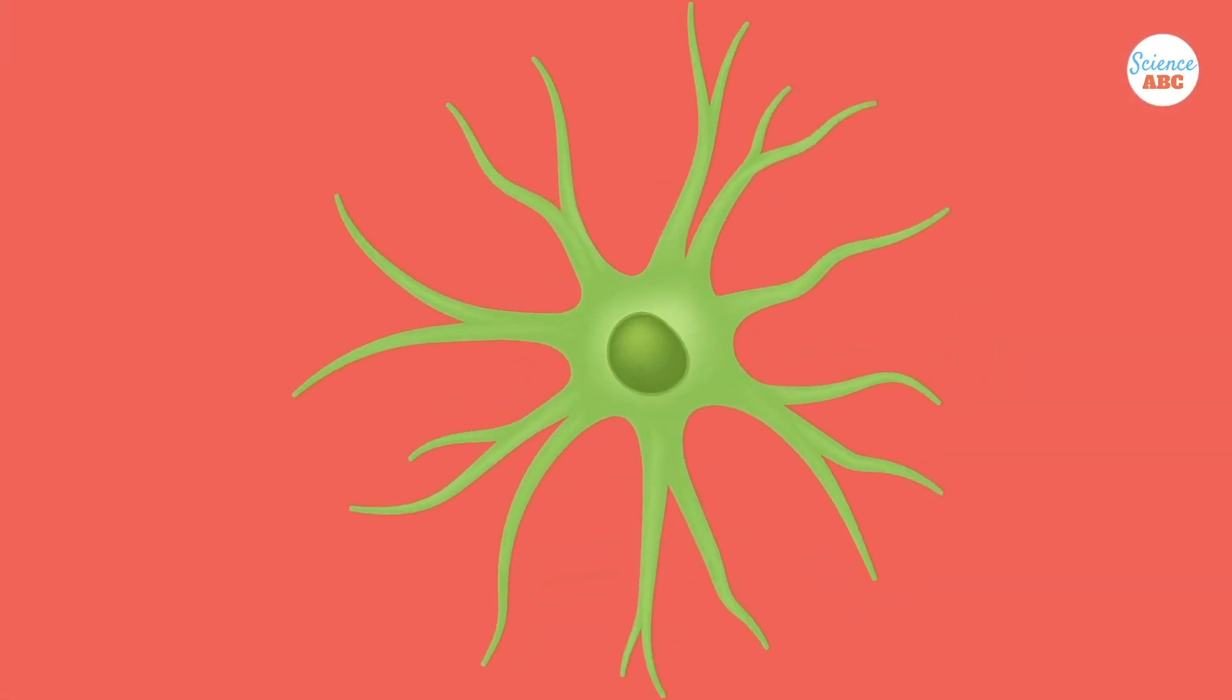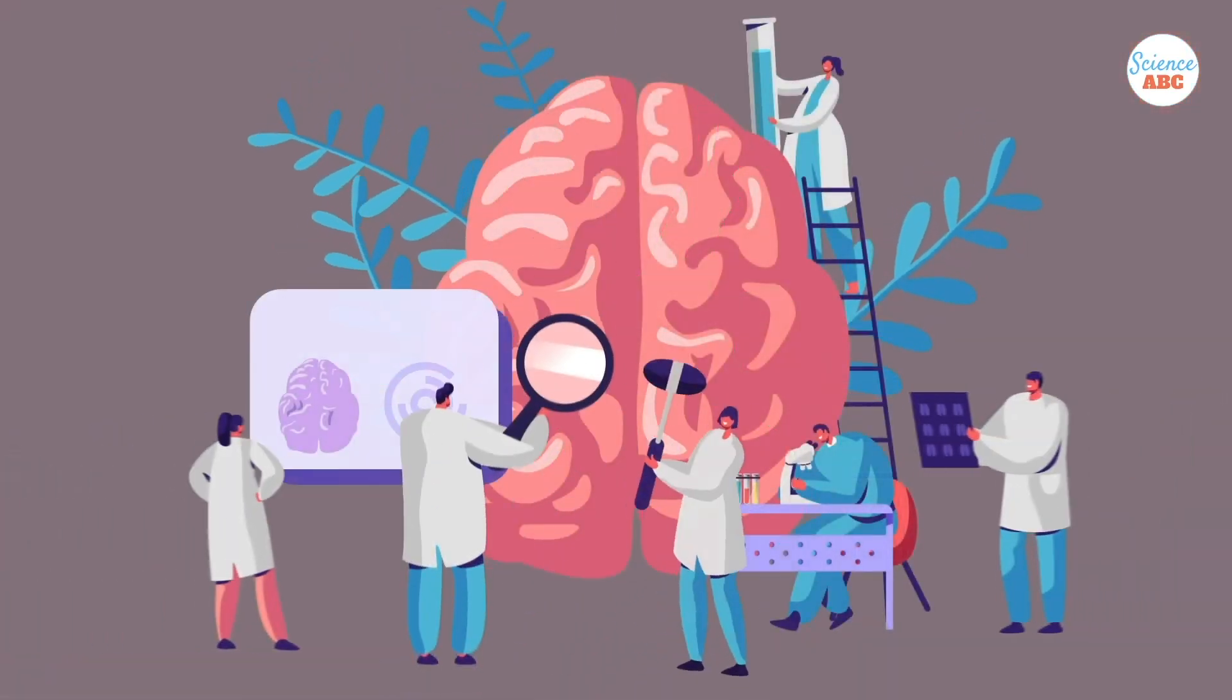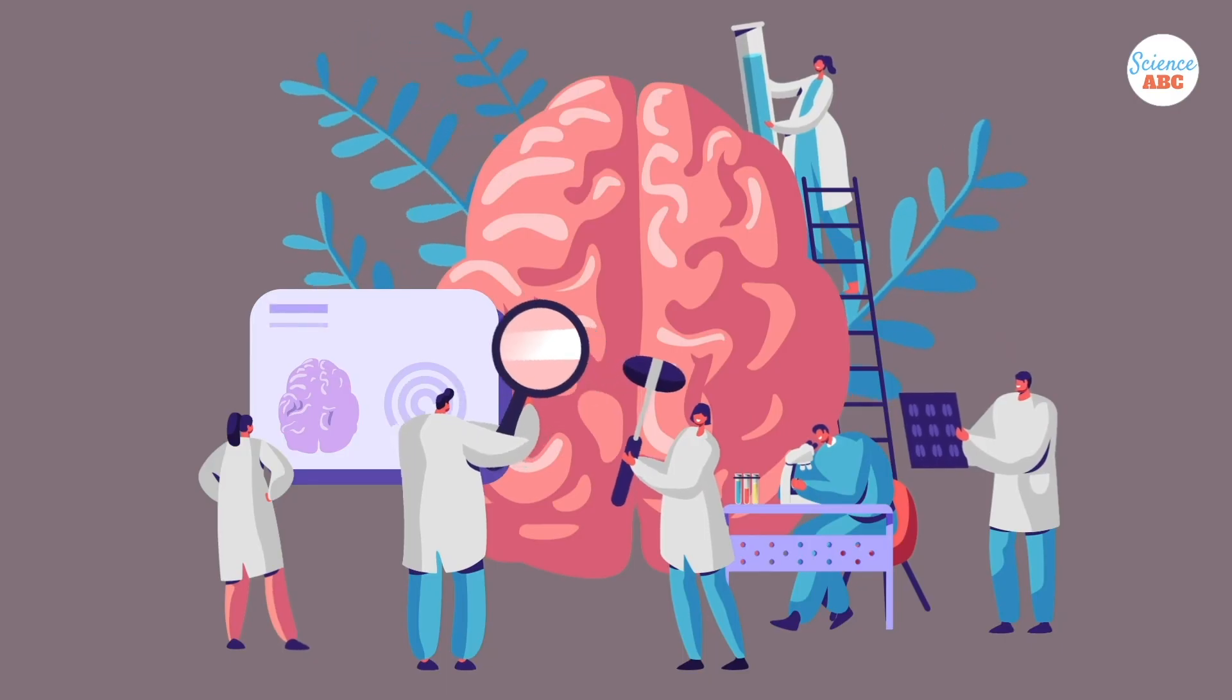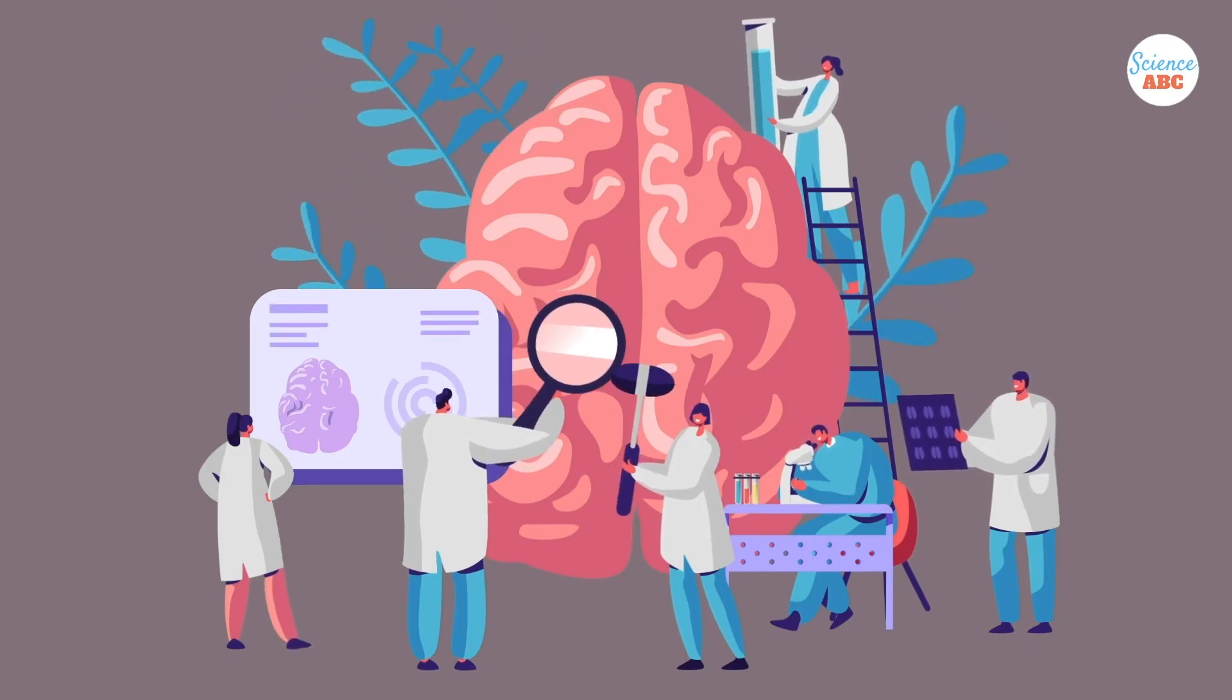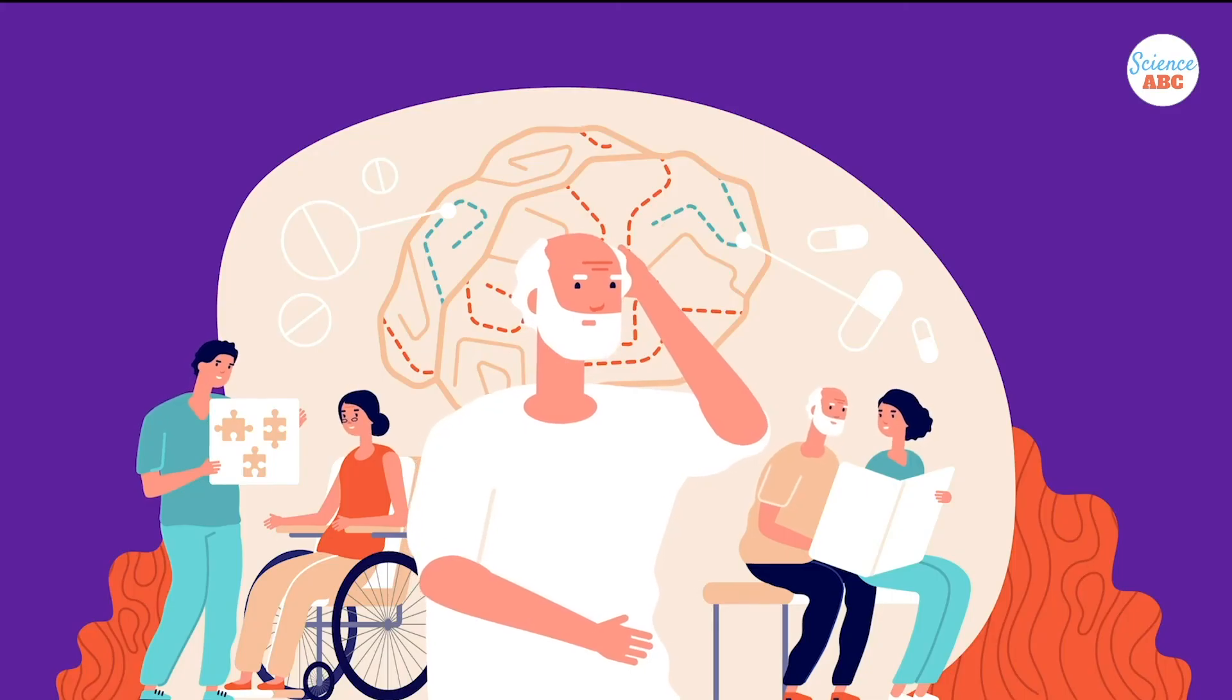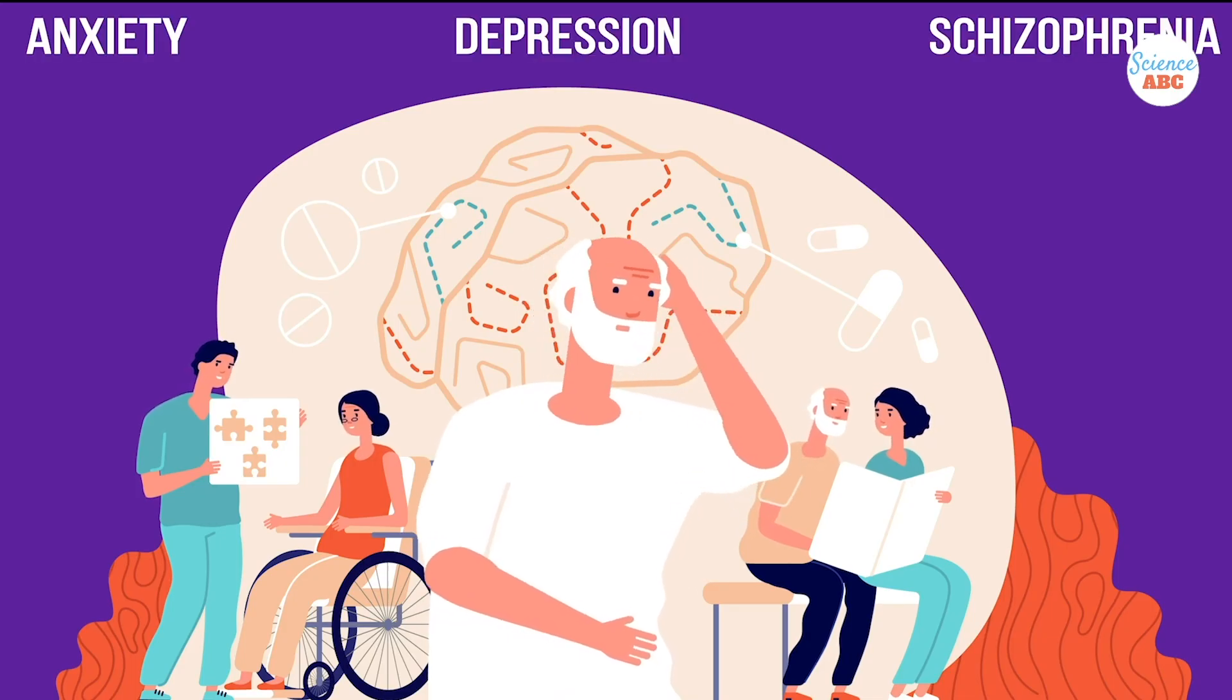With scientists trying to map out every neuron in the brain, it seems like figuring out glial cell connections would add a third dimension to how we understand the brain, leading to potential therapies to treat disorders like anxiety, depression, and schizophrenia.